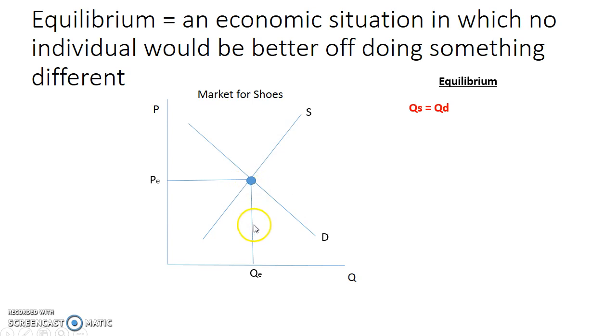A mistake I've seen is people labeling this as QD, saying this is the quantity demanded. And while it is the quantity demanded, the intersection of the supply and demand curve creates the equilibrium quantity. So it's not just quantity demanded, but also quantity supplied. You don't use these as your labels for the intersection.